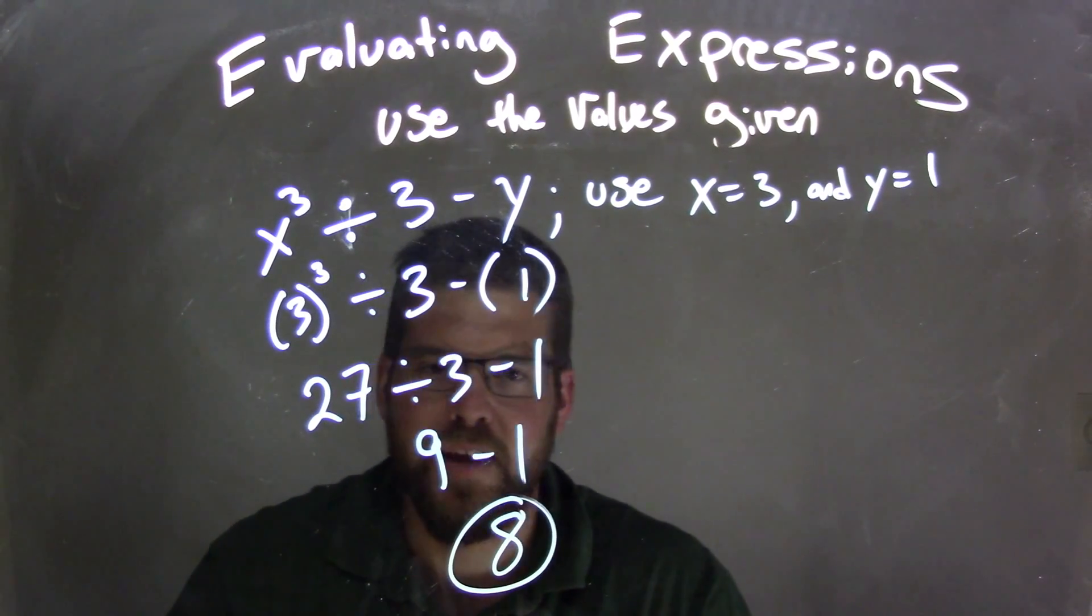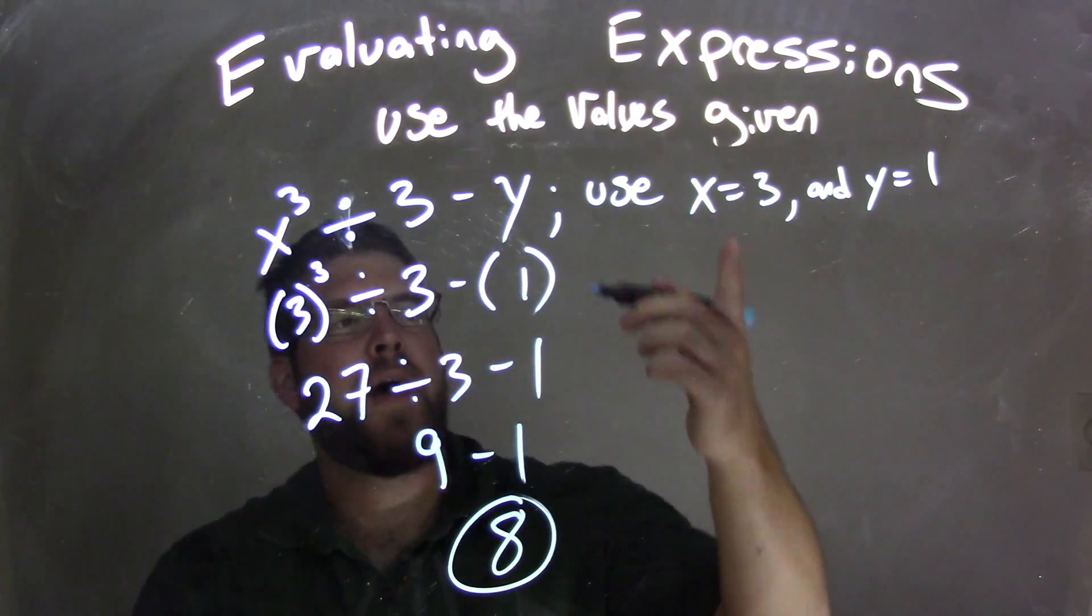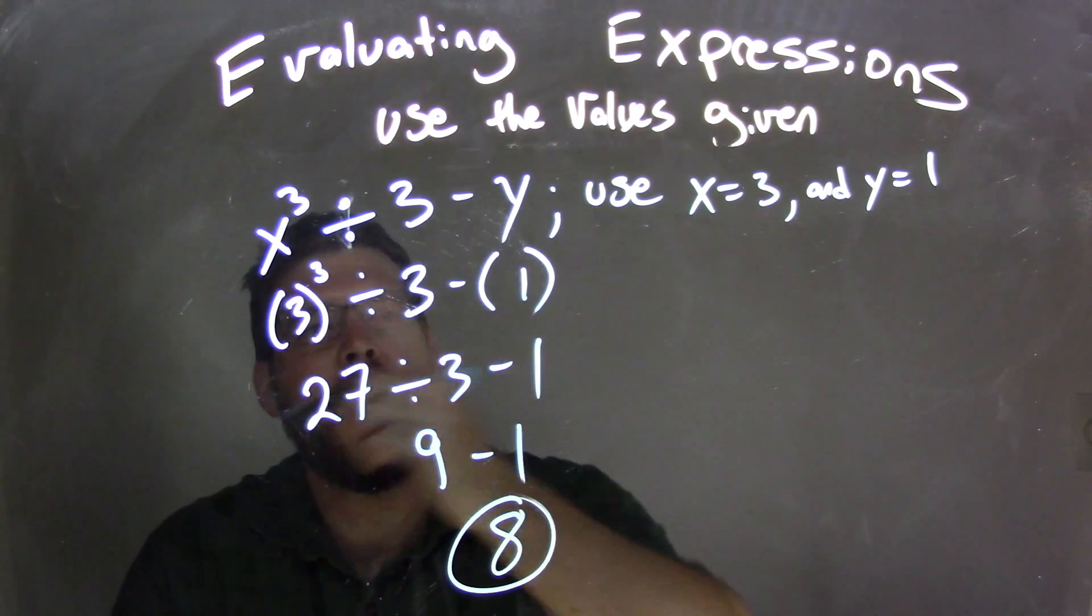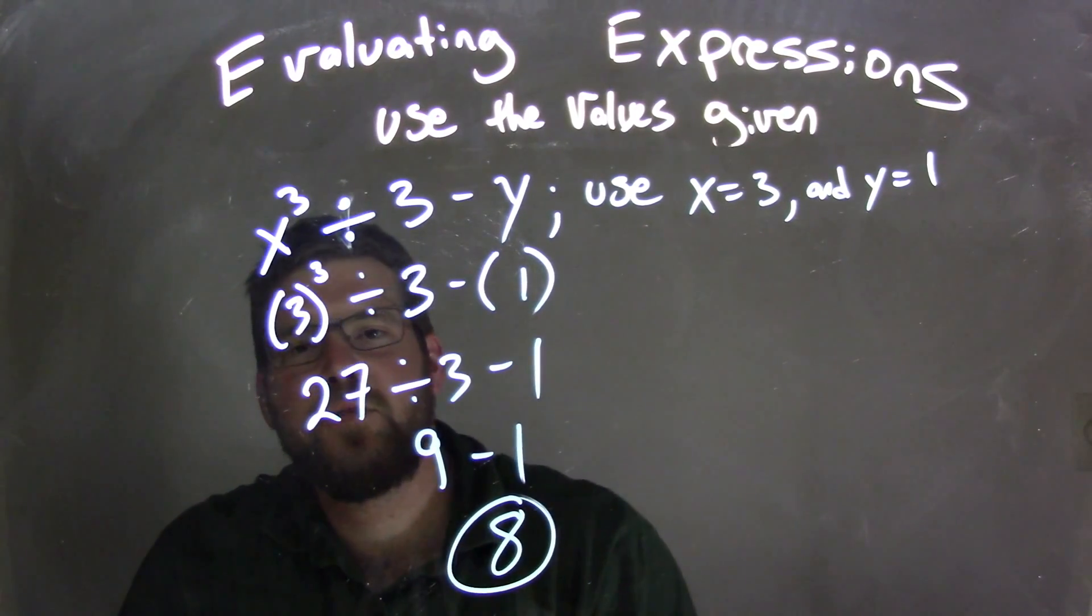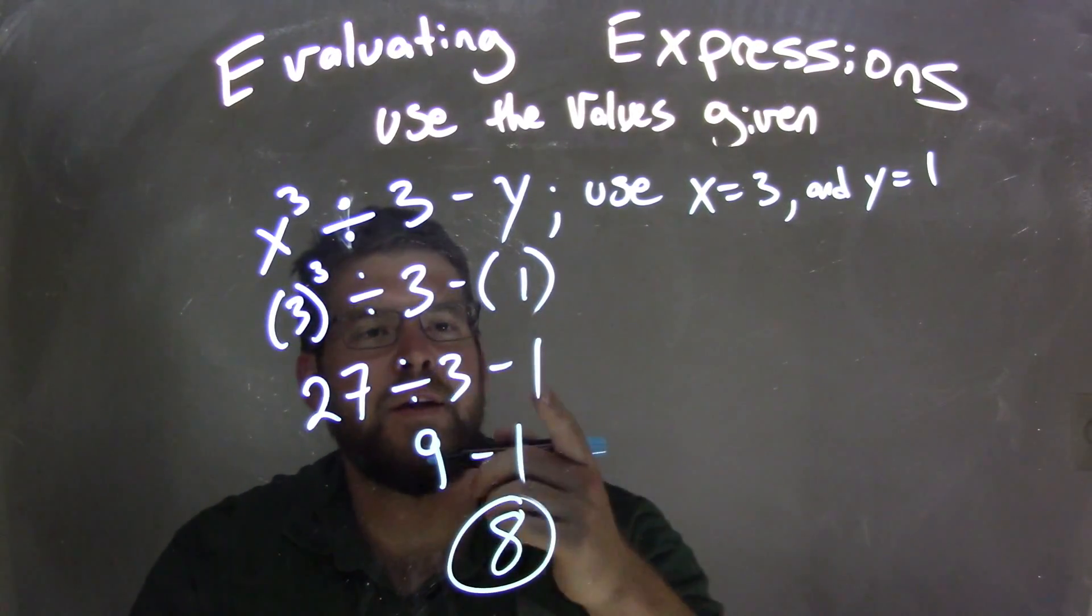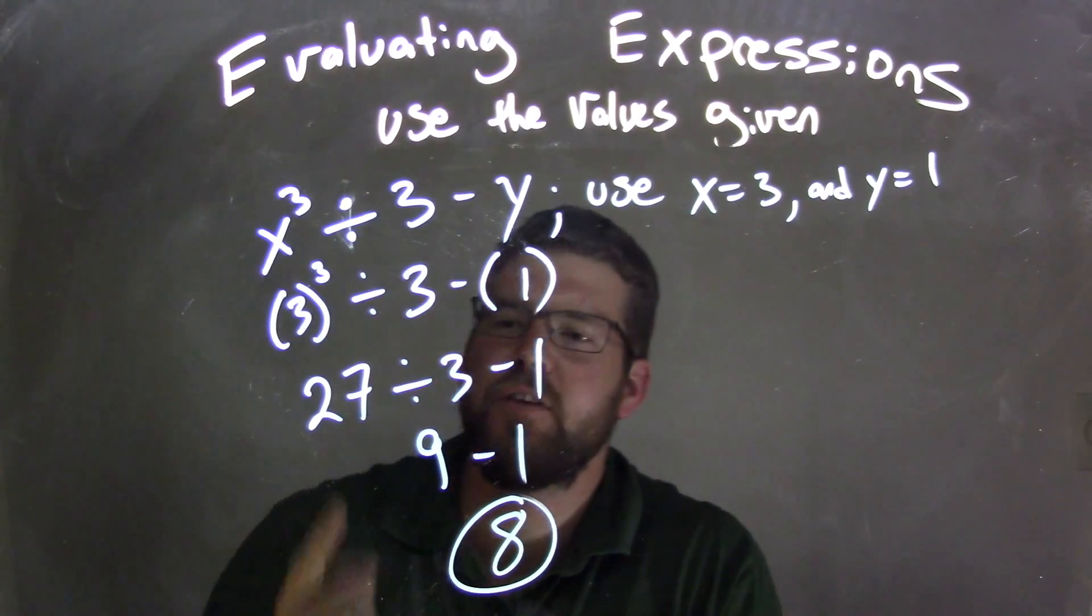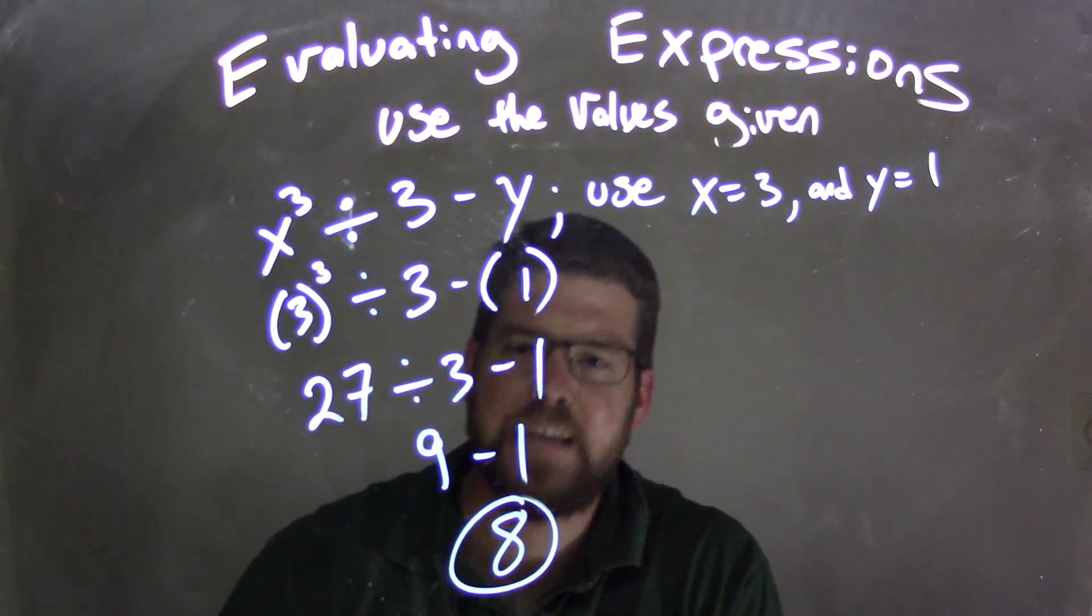So again, recap: x equals 3, y equals 1. We brought the 3 in for x, 1 in for y. 3 to the third is 27, and 1 is our y here. 27 divided by 3 was the next step, which is 9, and 9 minus 1 is 8.